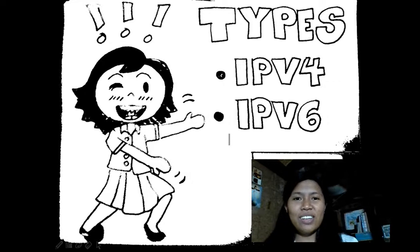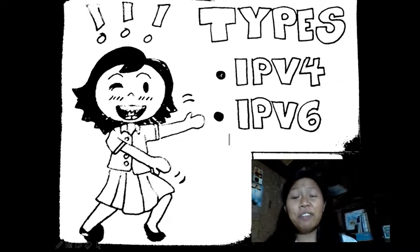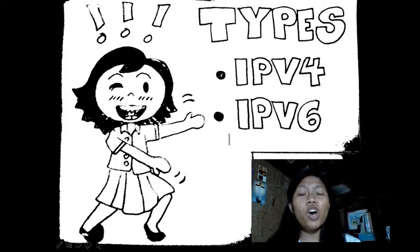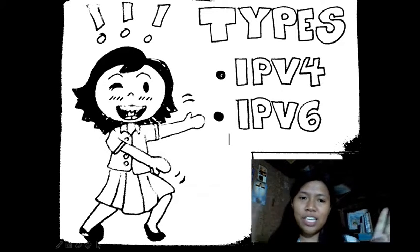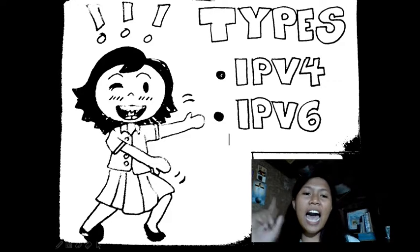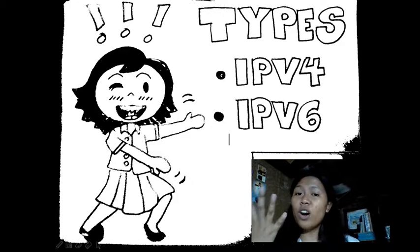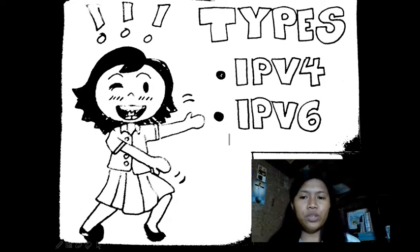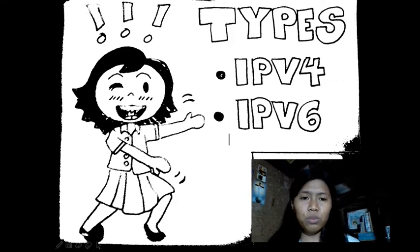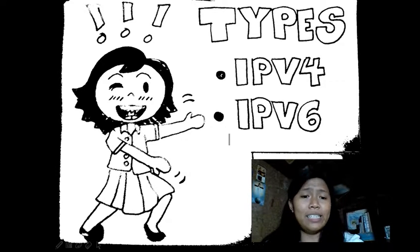There are two types of IP address: IPv4 and IPv6. Let's elaborate more about what IPv4 and IPv6 are.